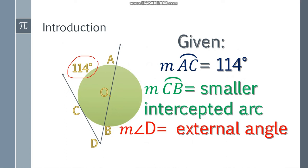We don't know the measure of the smaller intercepted arc. And of course we don't know the measure of angle D, the external angle, because that is the question. We are asked to find the measure of angle D. How are we going to solve that?